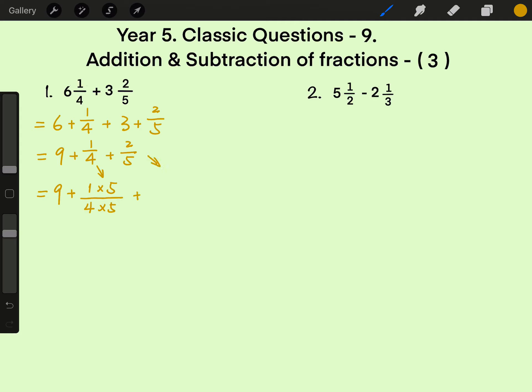For 2 fifths, denominator 5 times 4. Then at the same time, numerator must times 4. Next,